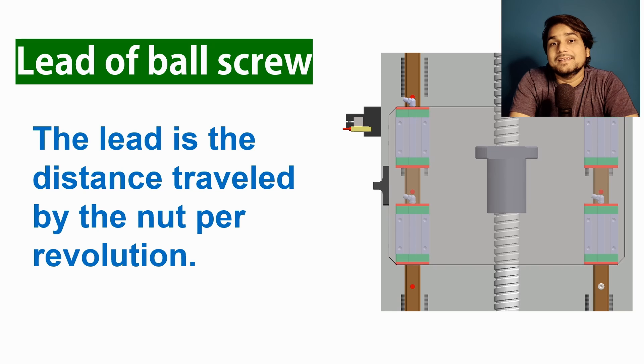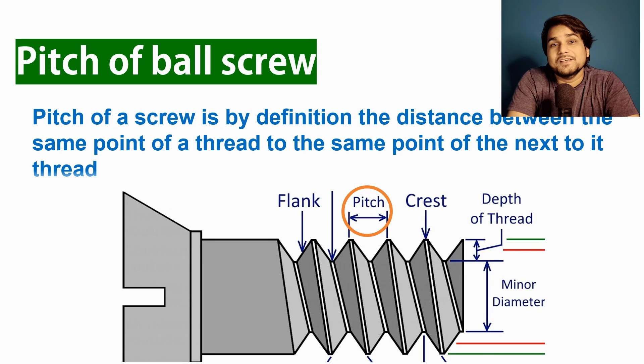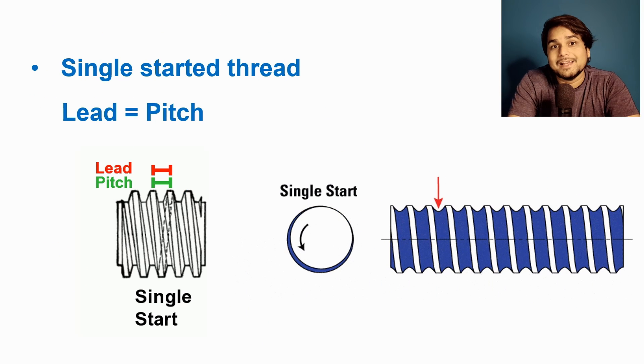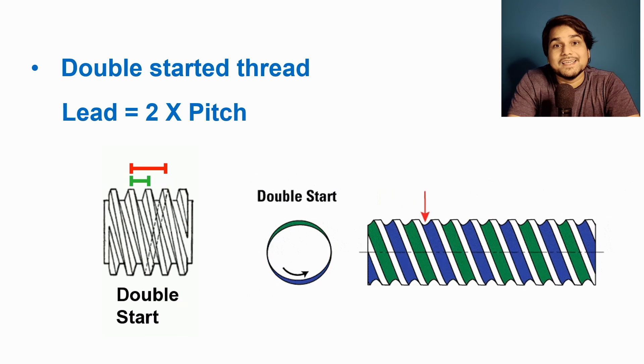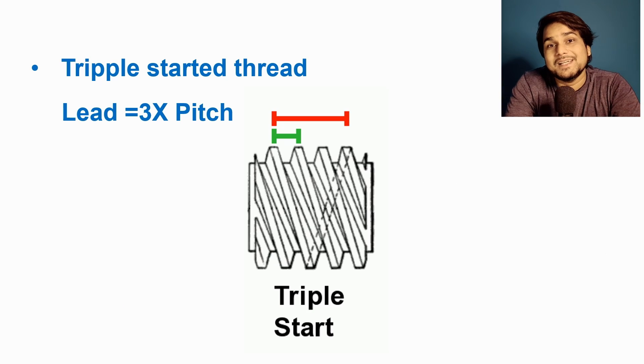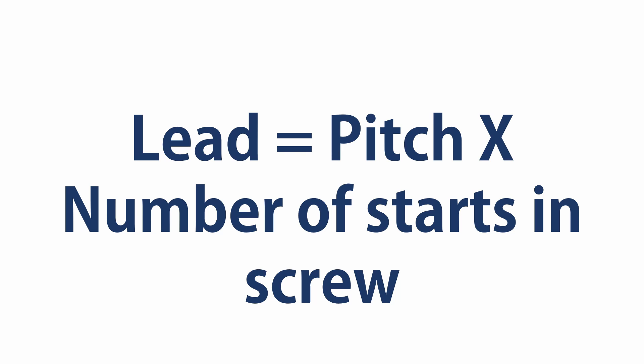Now let's understand the difference between lead and pitch of a ball screw. Lead is the distance traveled by the nut per revolution. Pitch, by definition, is the distance between the same point on one thread to the same point on the next thread. If the screw is single-start, pitch and lead are exactly the same. For a double-start screw, lead is double the pitch. For a three-start screw, lead is triple the pitch. The formula is: Lead = Pitch × Number of starts.